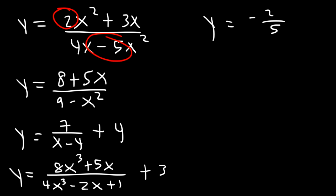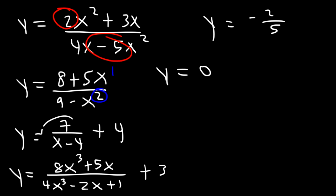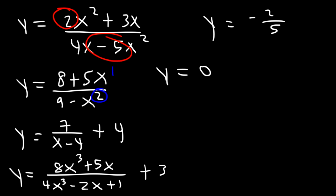For the next one, notice that we have a bottom-heavy function — the degree of the denominator is greater than that of the numerator; 2 is greater than 1. So any time it's bottom-heavy, the horizontal asymptote is y equals 0. This one is also bottom-heavy, so that's 0, but we have a plus 4, so it's going to be y is equal to 4.